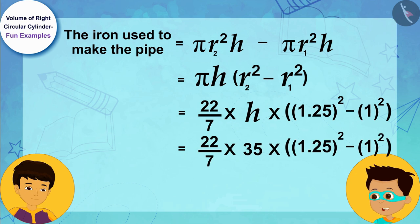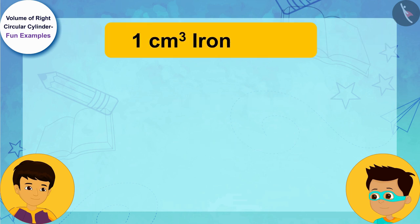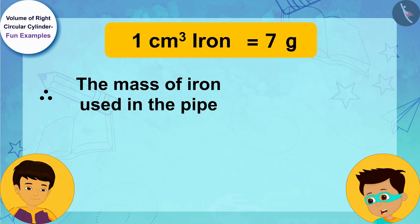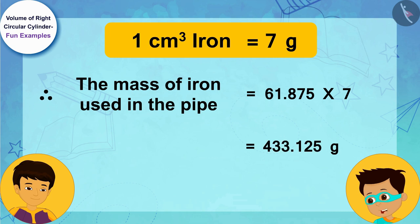Now it's my turn. I will solve it quickly. In this way, we know that one cubic centimeter of iron is equal to 7 grams. Therefore, the mass of iron used in the pipe is 61.875 times 7, that is, 433.125 grams.